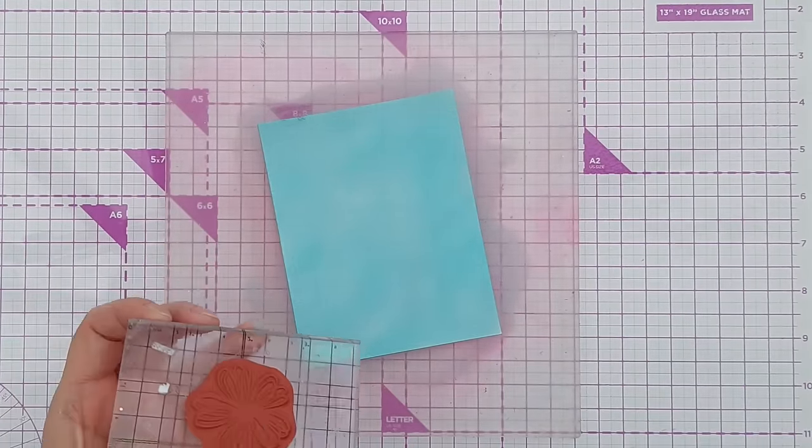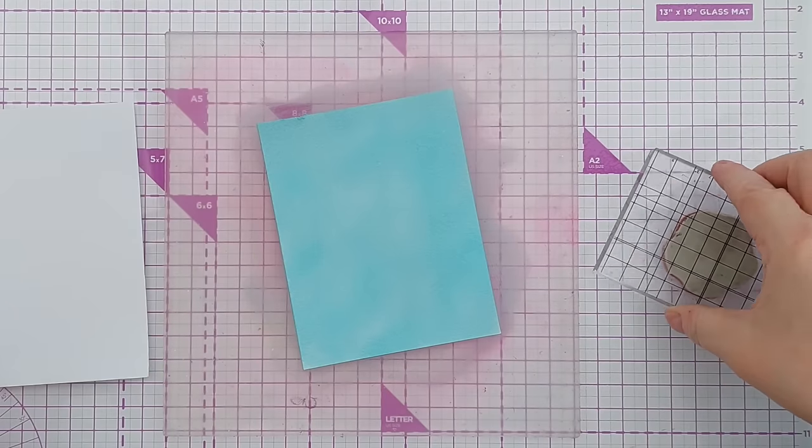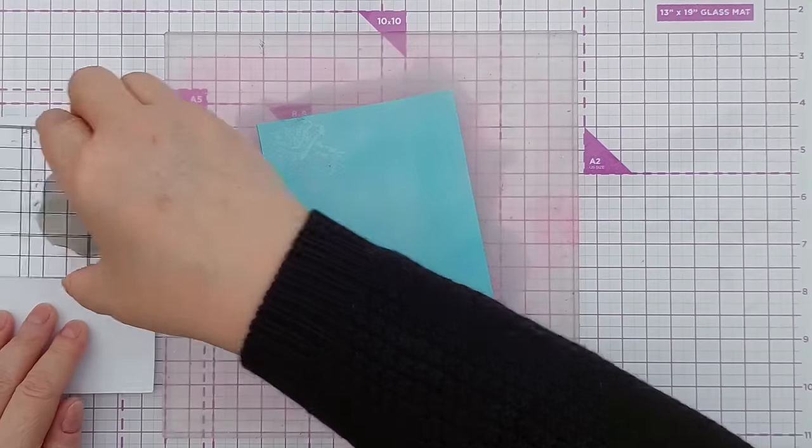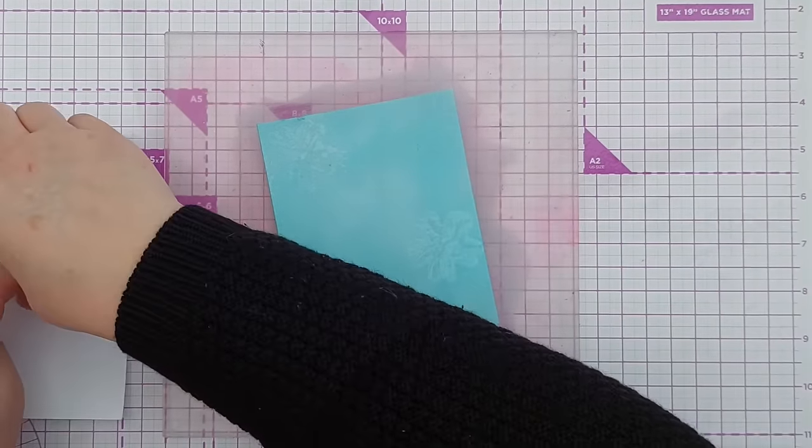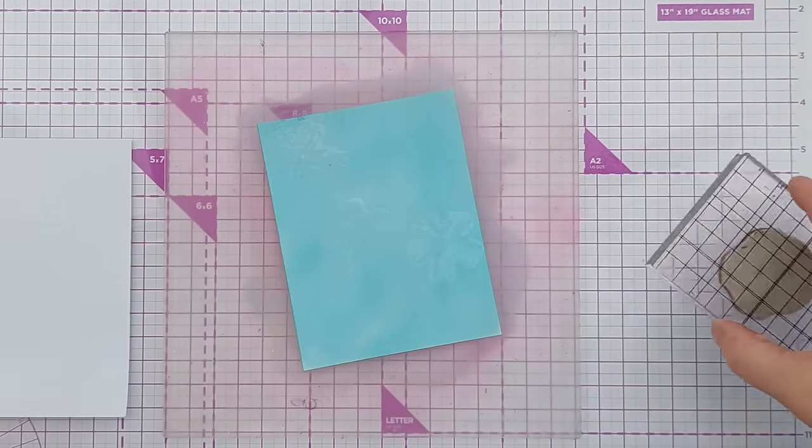The first thing I'm going to do is stamp with water. Put some water on the mat, pick up the water, stamp it on, and then stamp off on another piece of paper just to dry my stamp in between each go. I want to cover the whole thing really.